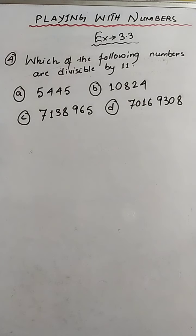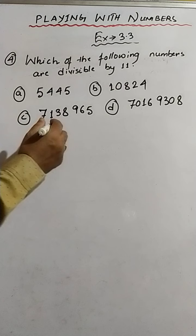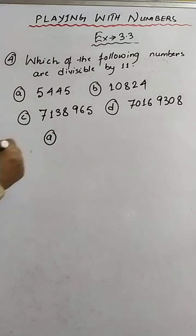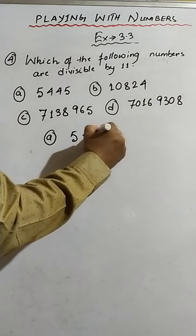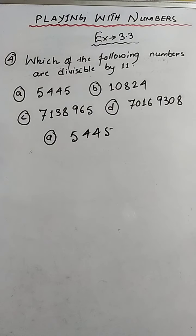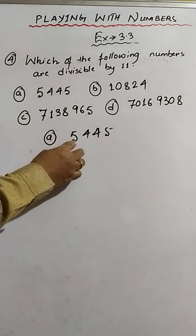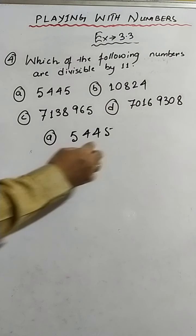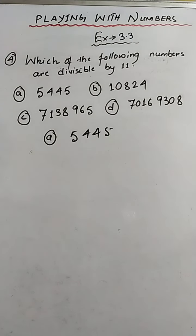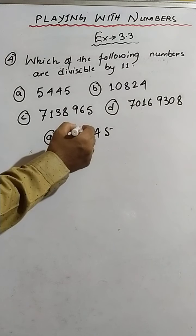Let's take sum number A: 5, 4, 4, 5. Now this first position is number 1, this is number 2, this is number 3, this is number 4. The numbers I am encircling are those at odd positions — odd position numbers.